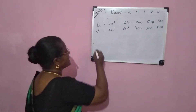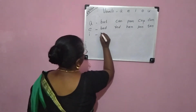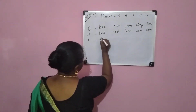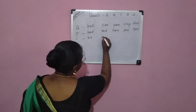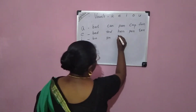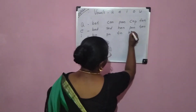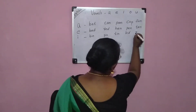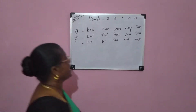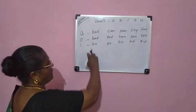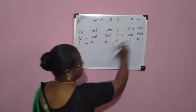I sound. Words with the I vowel sound: din, pin, tin, kid, sit. I vowel sound: bin, pin, tin, kid, sit.